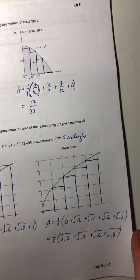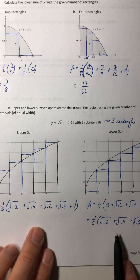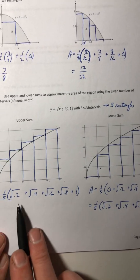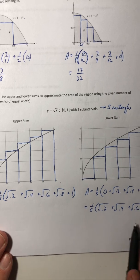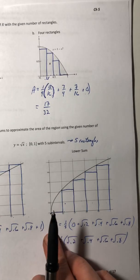Okay. So there is your upper and your lower sum. So if we actually get the decimal approximations for each of these, the upper sum is going to be the bigger of the two values. And it should be because that's the upper sum.